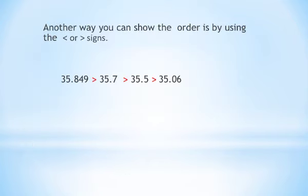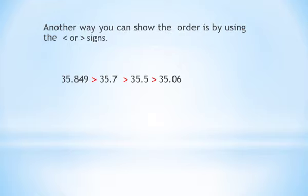Another way you can show the order is by using the less than or greater than sign. We place the symbols between the ordering numbers: 35.8 is greater than 35.7, which is greater than 35.5, which is greater than 35.06. So the biggest number in this set is 35.8 and the smallest number is 35.06.